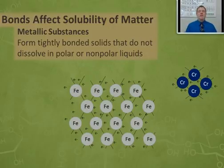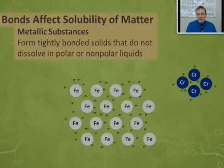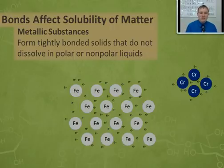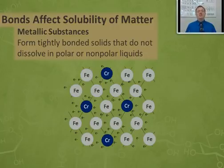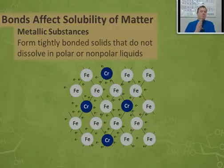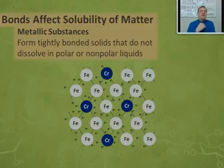In order to mix iron and chromium, I can't just put the solids together — I have to melt them both, which takes a considerable amount of energy. When I mix them together, they're going to share their electrons in the sea of electrons, and the chromium is going to mix perfectly evenly into the iron so it looks like one substance. When it cools off, it forms a solid that is actually one metal substance — chromium dissolved in iron. This is known as an alloy. But most importantly, metallic substances do not dissolve in water.